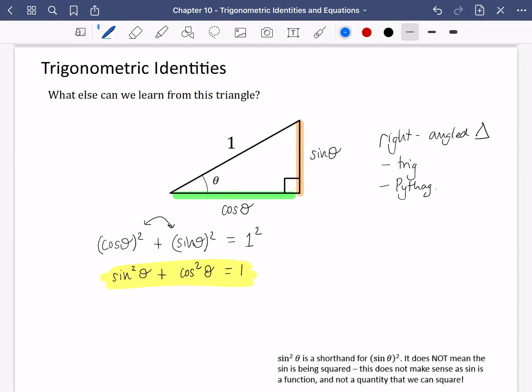And you may also like to write down some rearranged versions of this: that cos squared theta is going to be one minus sine squared theta, and that sine squared theta is one minus cos squared theta. So these two and this one here are very important, and they must be memorised.